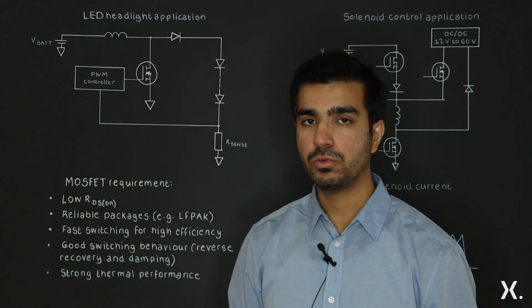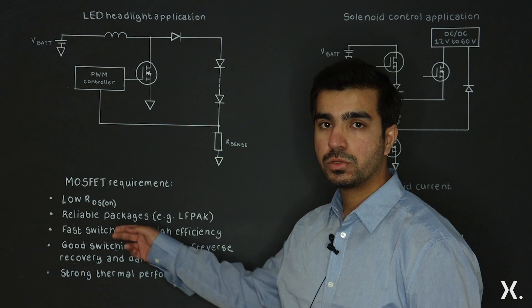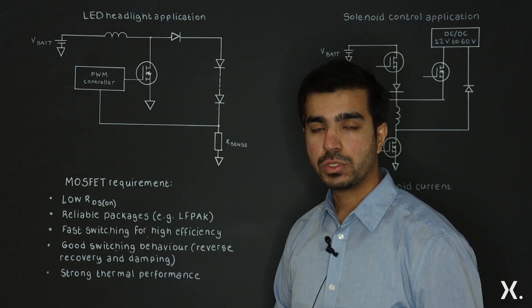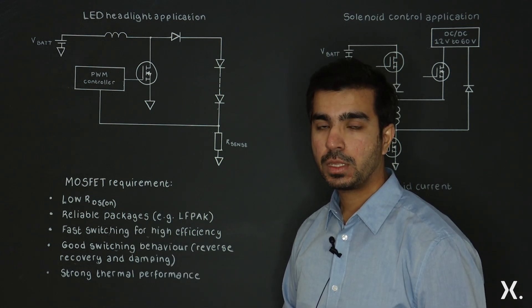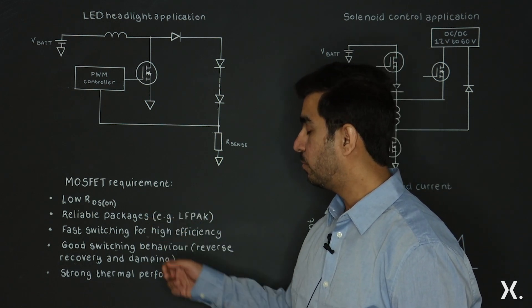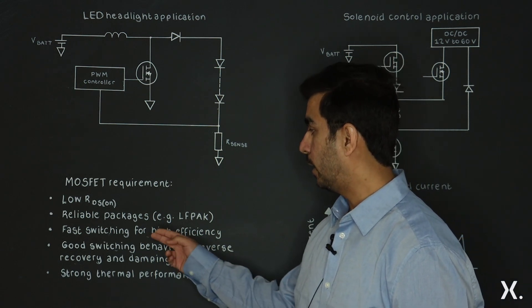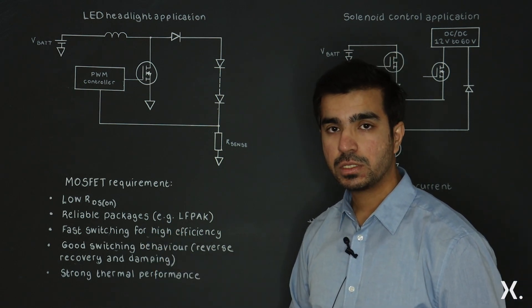NXP offers 80 to 100 volt MOSFETs that include low RDS(on) for exceptional robustness and board-level reliability with reliable packages, fast switching for high efficiency with reduced switching losses, and good switching behavior with reverse recovery and damping. And of course, they have strong thermal performance.